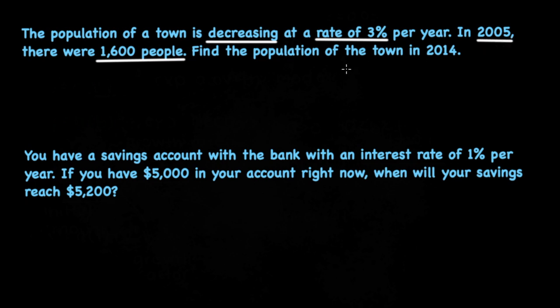We are asked to find the population of the town in 2014. So now that we know that the population is decreasing, we know that we're going to be using our exponential decay model, which means that we're going to be using the decay factor 1 minus r.